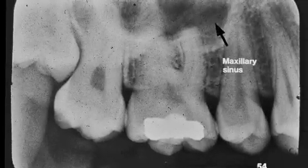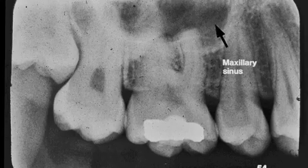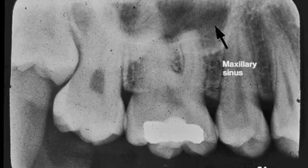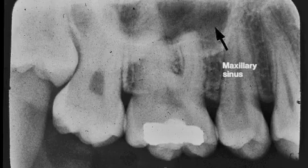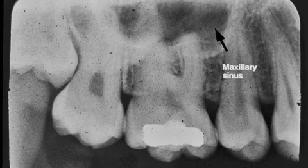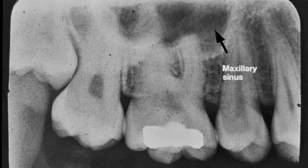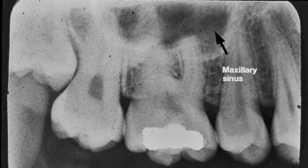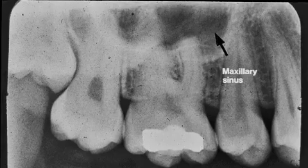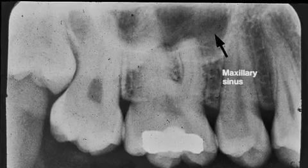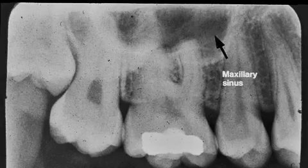The arrow points to the radiolucent maxillary sinus. The sinus extends from the distal of the canine posteriorly. It is a large radiolucent area outlined by cortical bone, and that cortical bone is radiopaque and forms the floor of the sinus.